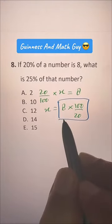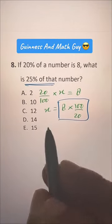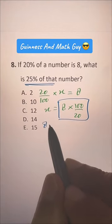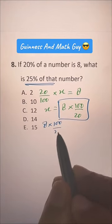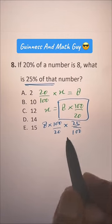We want 25% of that number, just multiply it by 25%. So, 8 times 100 over 20. 25% of that will be 25 over 100 multiplied.